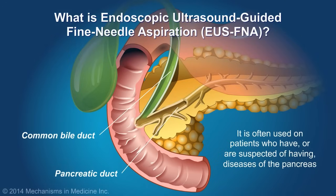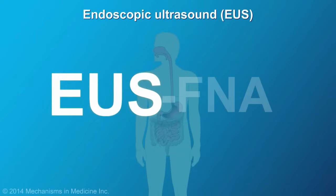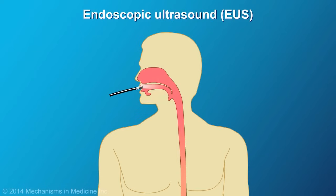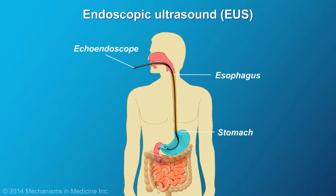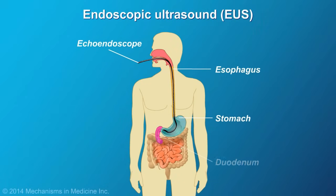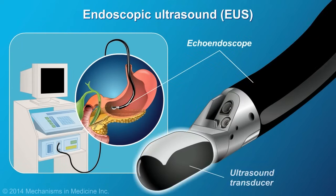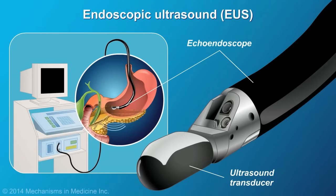EUS-FNA is often used on patients who have, or are suspected of having, diseases of the pancreas. The endoscopic ultrasound component of the EUS-FNA procedure involves the insertion of a thin flexible tube, an echoendoscope, into the mouth, esophagus, stomach, and further into the small intestine, known as the duodenum. At the tip of the echoendoscope is an ultrasound transducer. The sound waves emitted and detected by the transducer are converted into detailed images of the pancreas and surrounding abdominal organs.